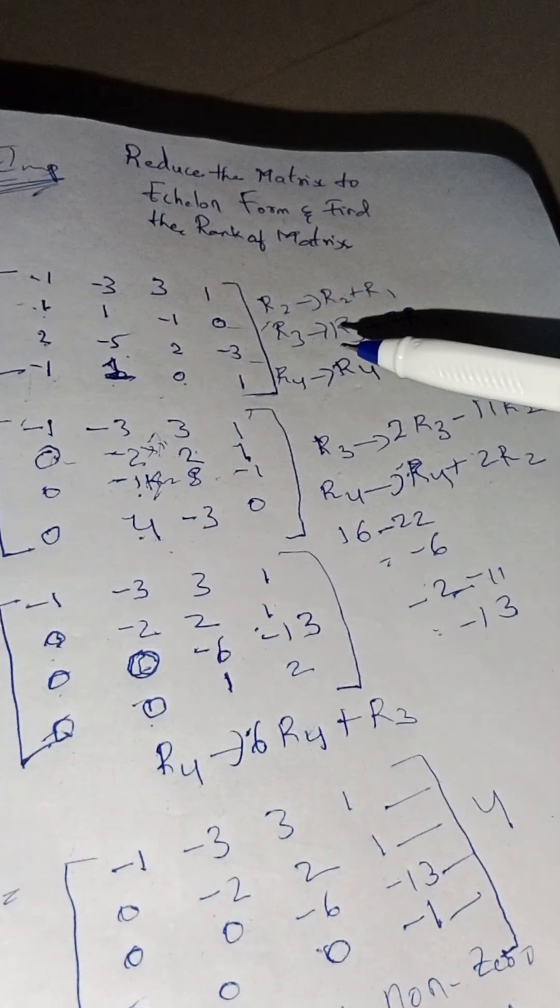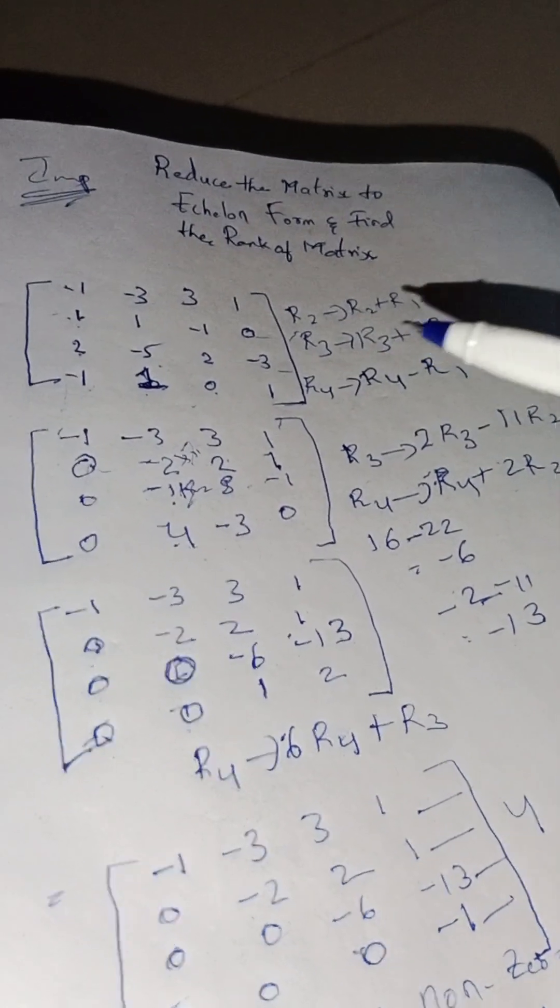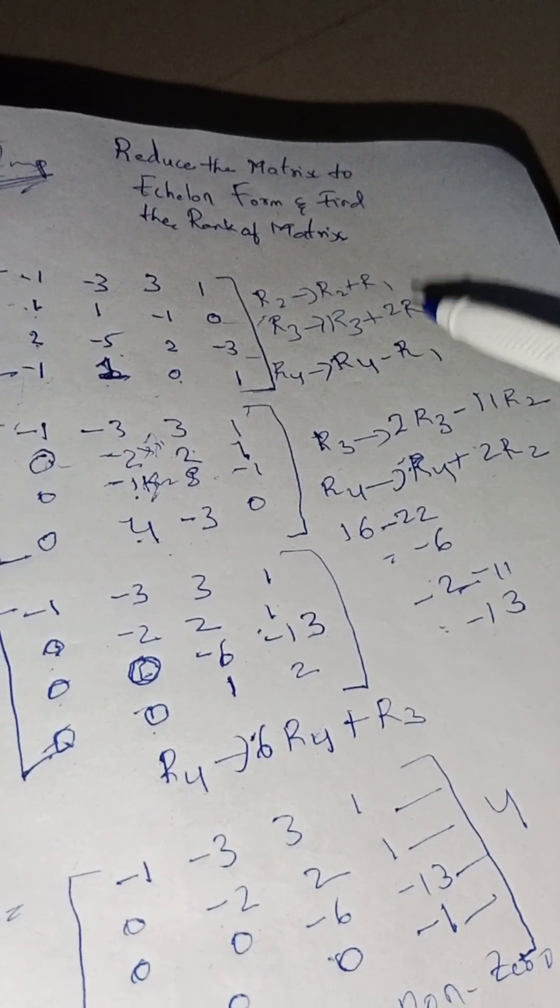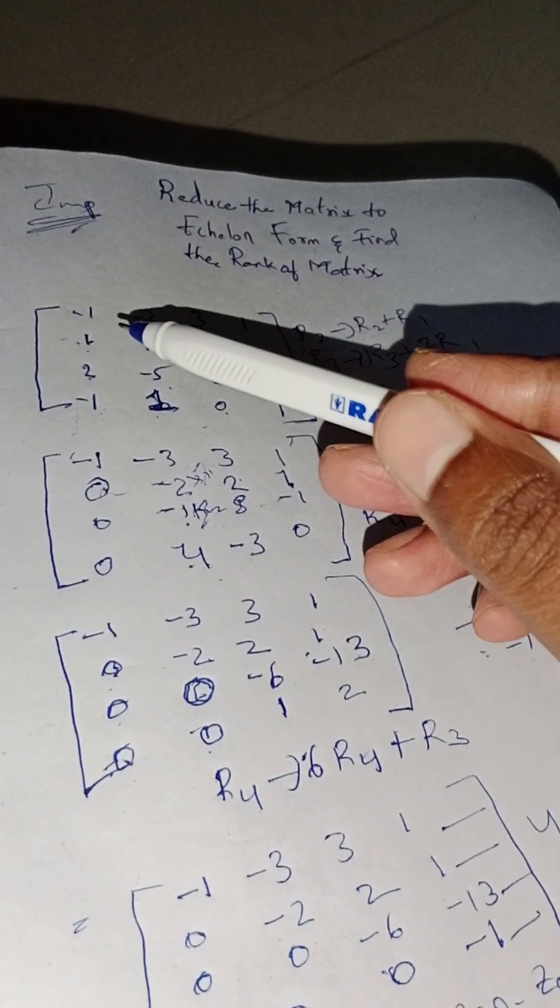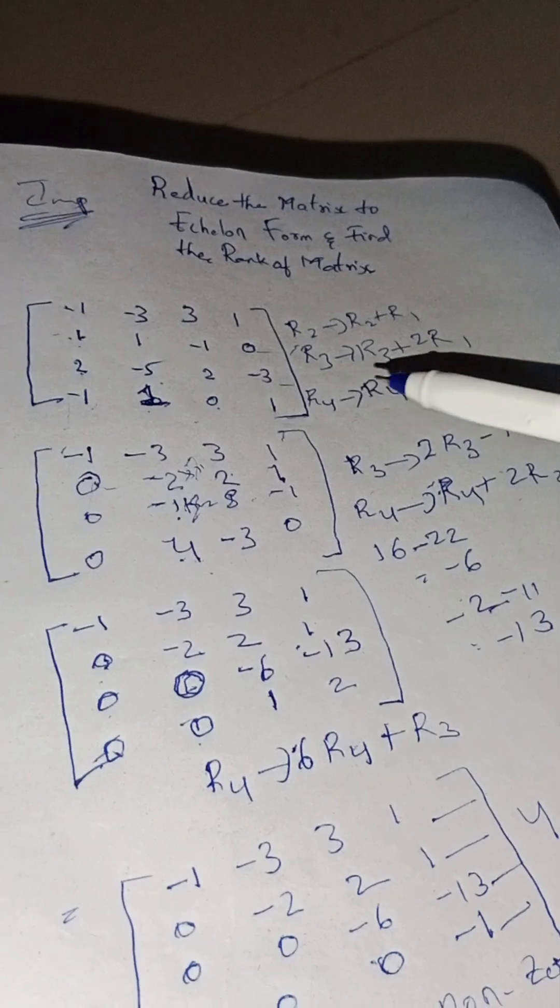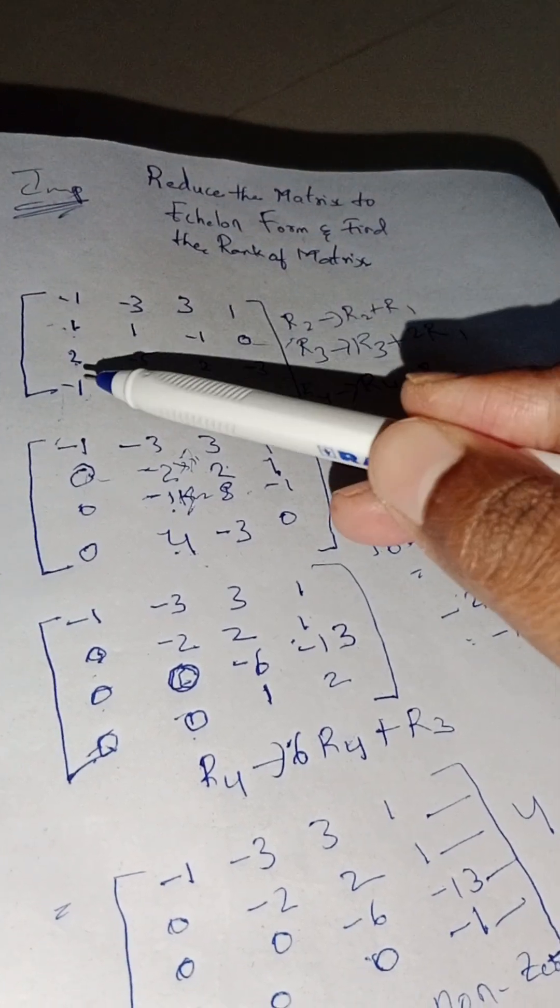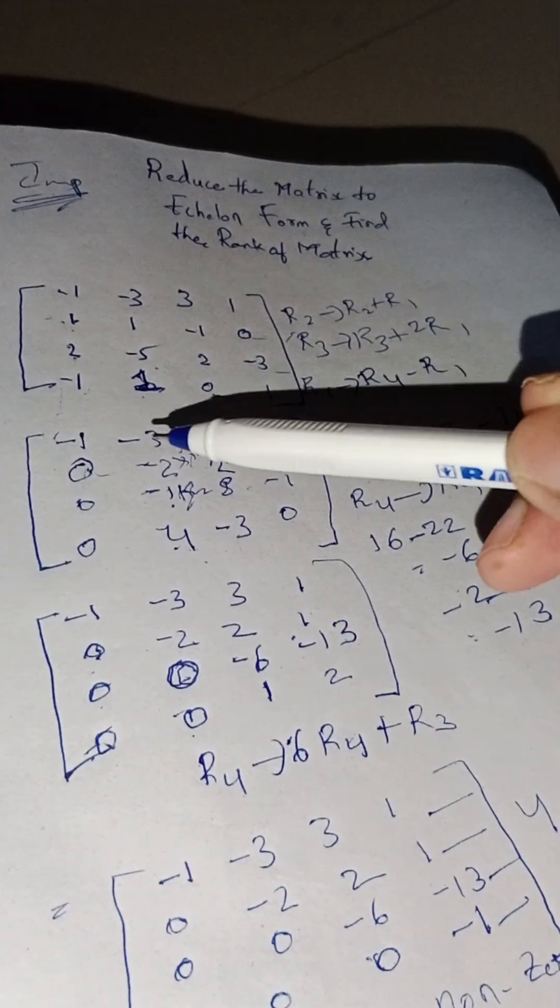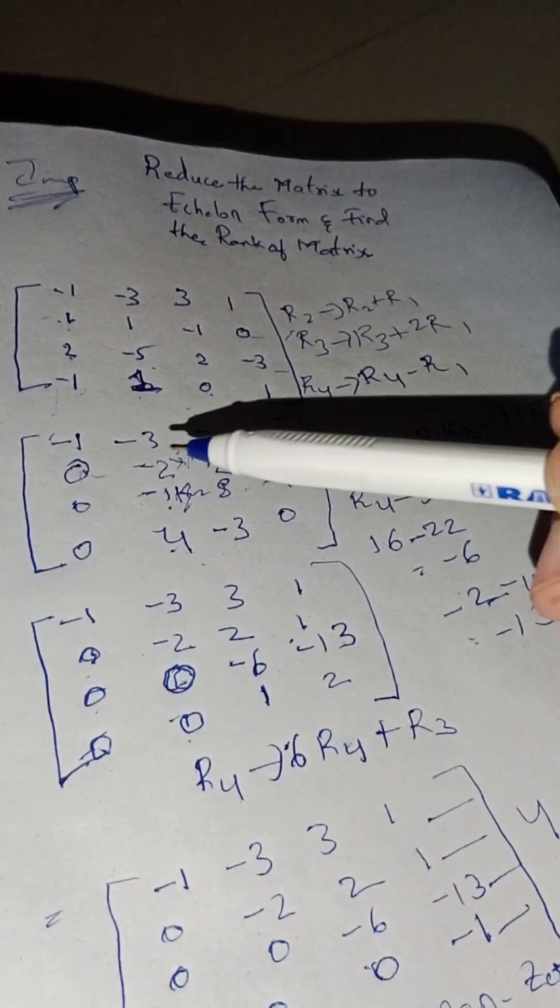First we have to take row transformations for row 2, row 3, and row 4. So R2 is R2 plus R1, because 1 minus 1 will be 0, right? R3 is R3 plus 3R1 because 2 minus 2 is 0. R4 is R4 minus R1. After applying the row transformation we got the answer.